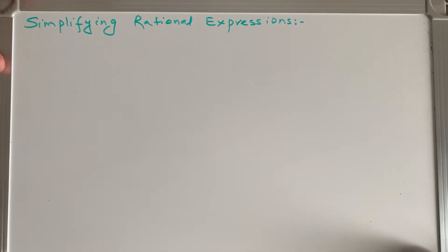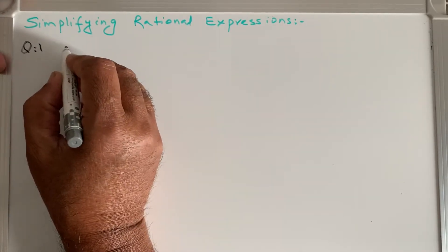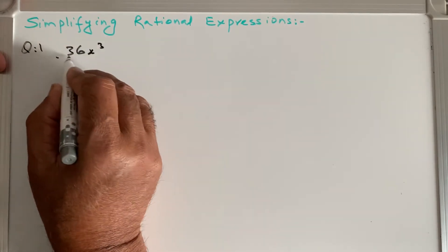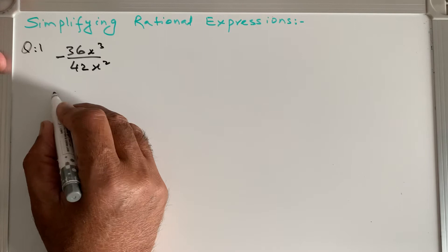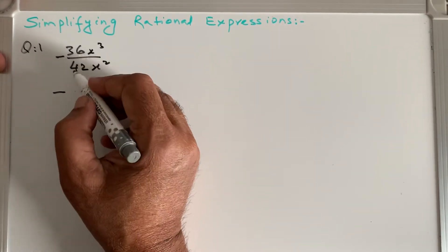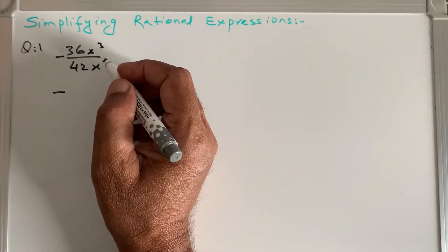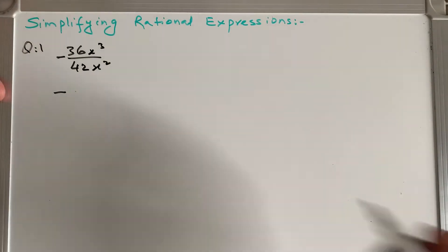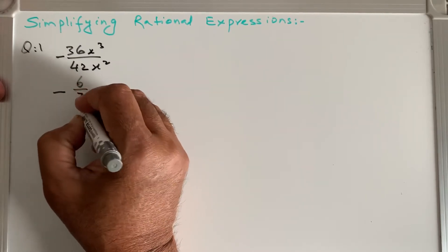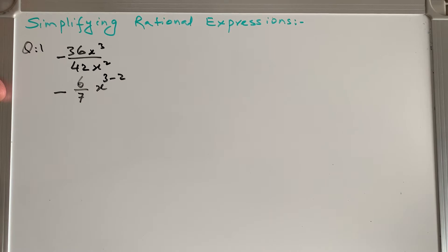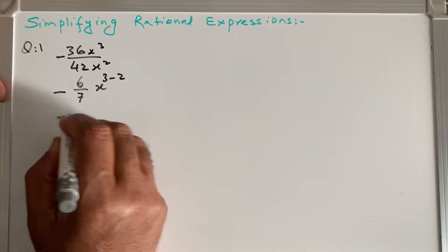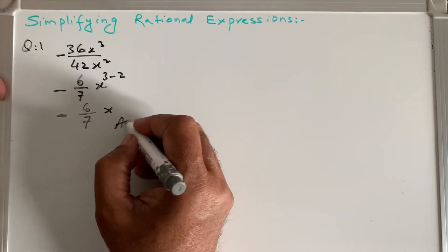Question 1: (36x³ - 36x³) / 42x². We keep the negative sign as is. We find what number goes into both 36 and 42 — six 6s are 36 and six 7s are 42. For the exponent rule, division acts as subtraction, so the denominator exponent comes to the numerator as a subtraction. Our simplified form is -6/7 · x¹, and since x¹ we don't write the exponent, so the answer is -6x/7.